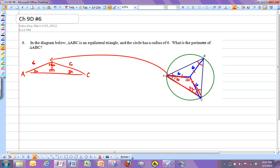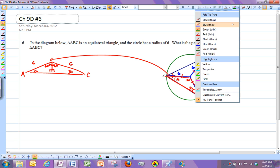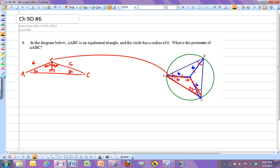If I cut this right down the middle, I get a 30-60-90 triangle here, two of them. So let me take a look at one of these by itself.